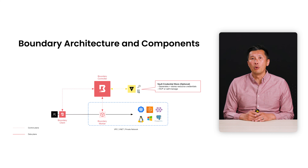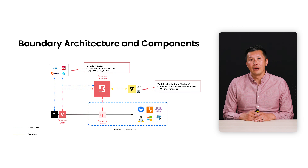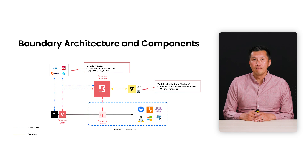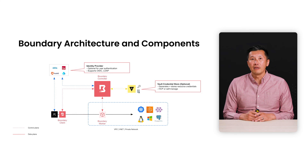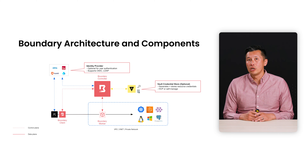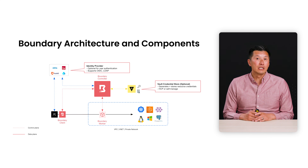Lastly, Boundary supports OIDC and LDAP to integrate with various identity providers and directory services like Okta, Ping, Auth0, and Active Directory. Boundary can store individual users and their respective logins and passwords, but many organizations have already centralized their identity providers, so it makes sense to offload authentication to those existing providers.